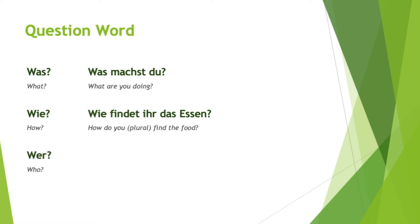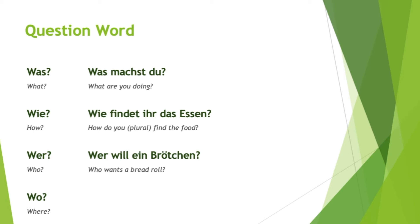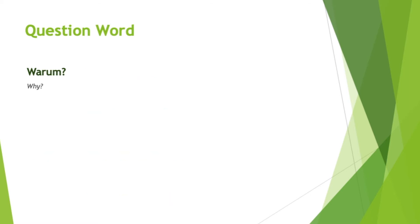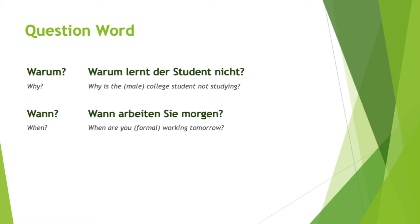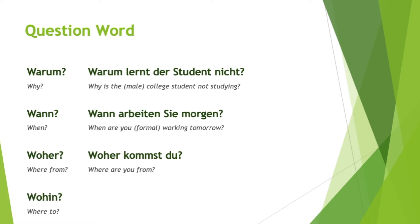'Wer' means 'who' — Who wants a bread roll? 'Wo' is a new word — repeat after me: Wo? 'Wo ist das Buch?' — Where is the book? 'Warum' means 'why' — 'Warum lernt der Student nicht?' 'Wann' means 'when' — 'Wann arbeiten sie morgen?' 'Woher' — 'Woher kommst du?' 'Wohin' — 'Wohin geht ihr?'